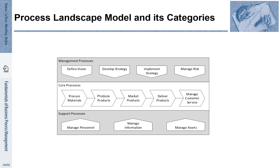The support processes help the core process to operate. The process of managing personnel helps ensure that personnel is available to work on the different steps. The manage information process helps ensure IT systems are in place. The manage asset process makes sure that the required technical infrastructure is there to conduct the process.